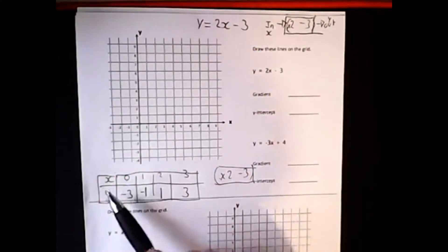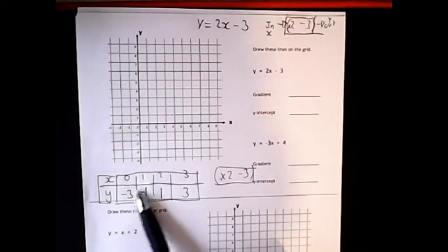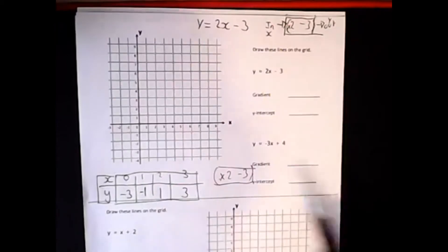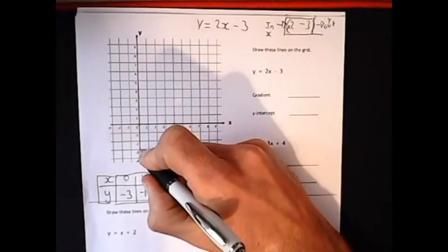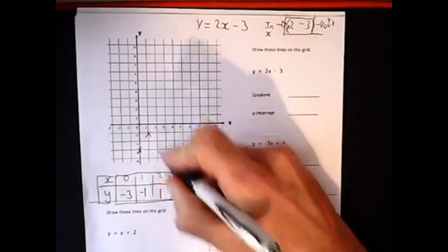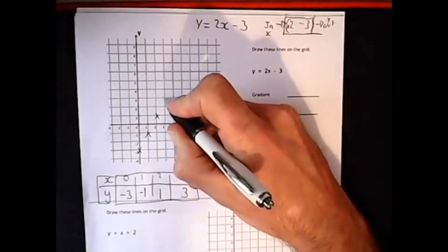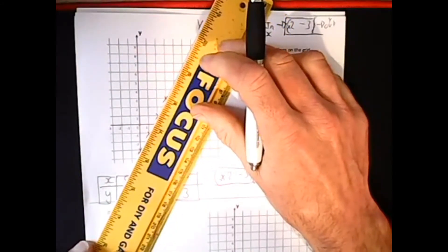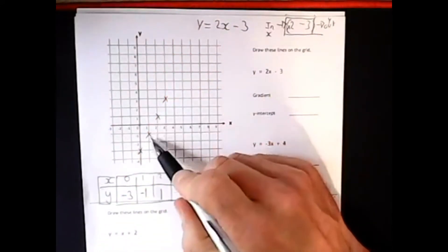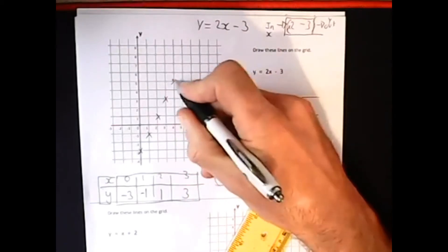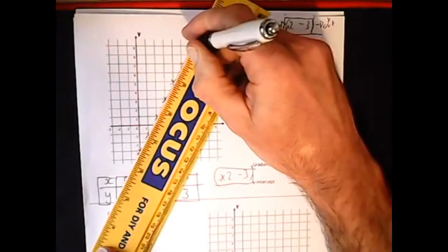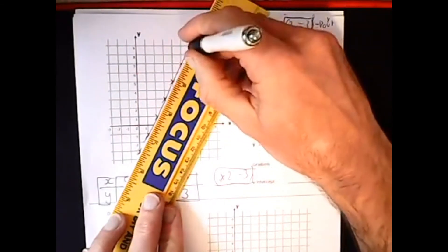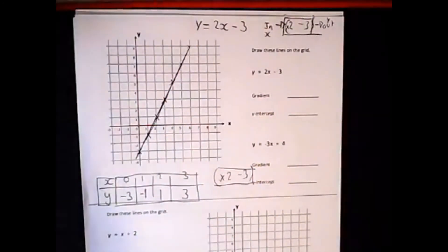Now we're plotting coordinates - not finding the gradient yet - so we go along the corridor then up or down the stairs. There's the first coordinate: nought, negative three, down here. One, negative one - there. Two, one. Three, three. I could do a few more points but we should be able to see that line coming together nicely. Another way: one along, two up, one along, two up - already finding the gradient here. Join them all up and there's our line. That bit's done.